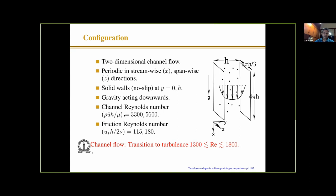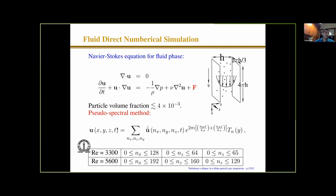Even though the Reynolds number is relatively small, it is still in the turbulent regime because the transition to turbulence takes place at a Reynolds number between 1300 and 1800. For the fluid phase, we use Navier-Stokes equations — mass and momentum conservation for an incompressible fluid. The system is incompressible because we have periodic boundary conditions, so the volume occupied by the particles is constant, meaning the volume occupied by the fluid is also constant. The only additional term is a drag force — the force exerted by the particles on the fluid.